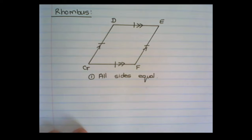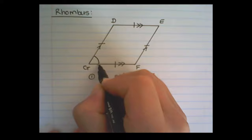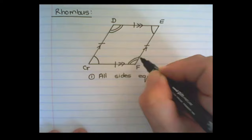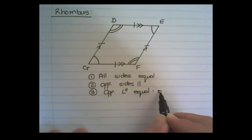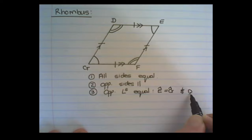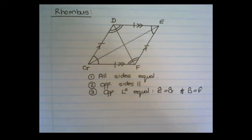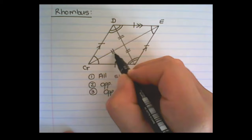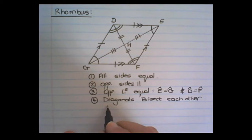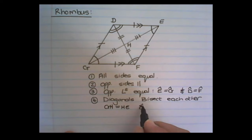The opposite angles are equal: angle E is equal to angle G, and angle D is equal to angle F. The diagonal lines bisect each other, meaning that the line GH would be equal to HE, and the line DH would be equal to the line HF.